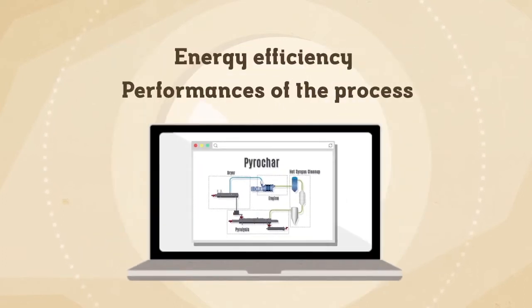Flexible control system: This new control optimizes the energy efficiency and performance of the process by monitoring all key parameters. Moreover, the process control ensures the sustainability of the pyrochar process, limiting the need for human supervision.